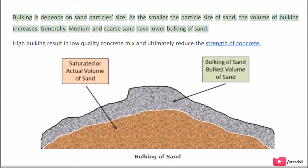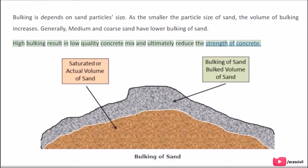Generally, medium and coarse sand have lower bulking. High bulking results in low-quality concrete mix and ultimately reduces the strength of concrete.